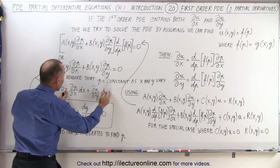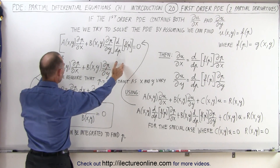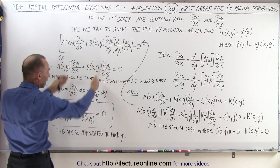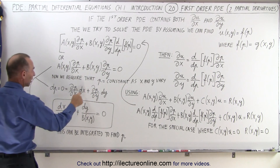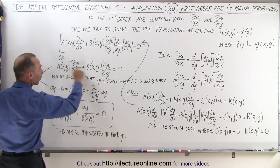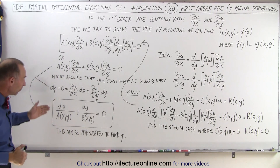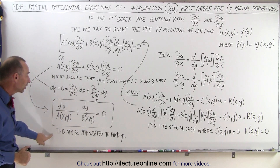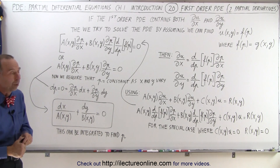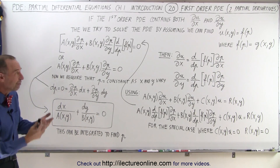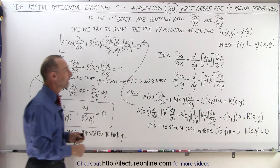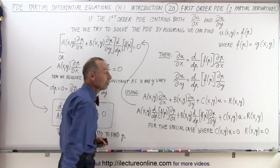Now if we take this equation and divide it by that equation, notice that the partial of P with respect to X and the partial of P with respect to Y will cancel out, and we end up with dX divided by A and dY divided by B, and that must equal zero since both of these equations equal zero. Once we have it in this format, we can integrate to find P, which is essentially what we're looking for. Instead of finding U directly, we want to find P — a function of X and Y — which will then be the solution to our original differential equation that has both A and B not equal to zero.